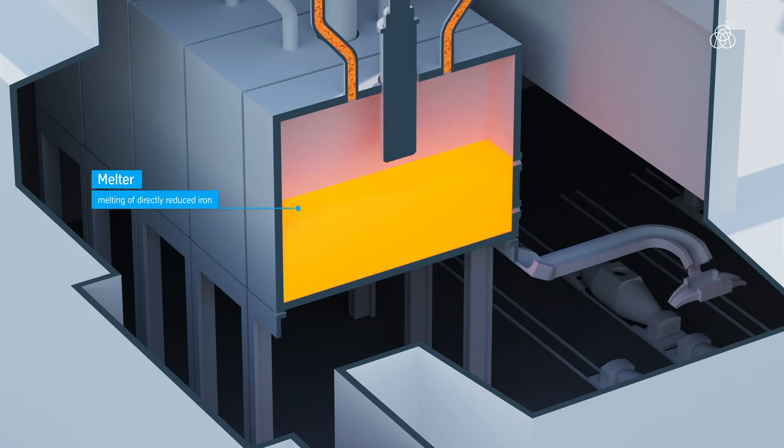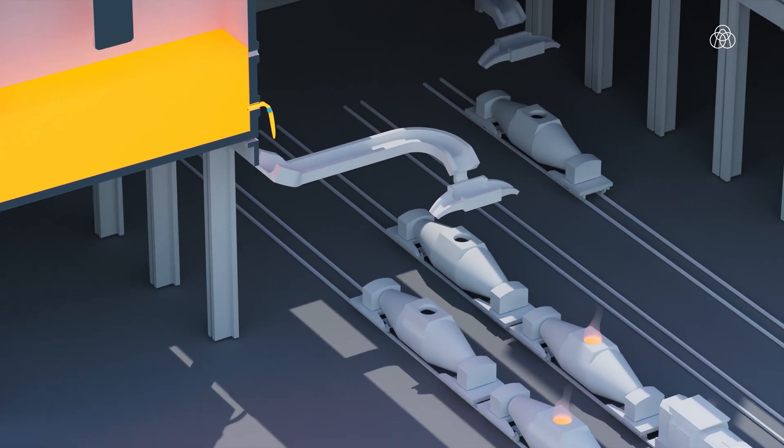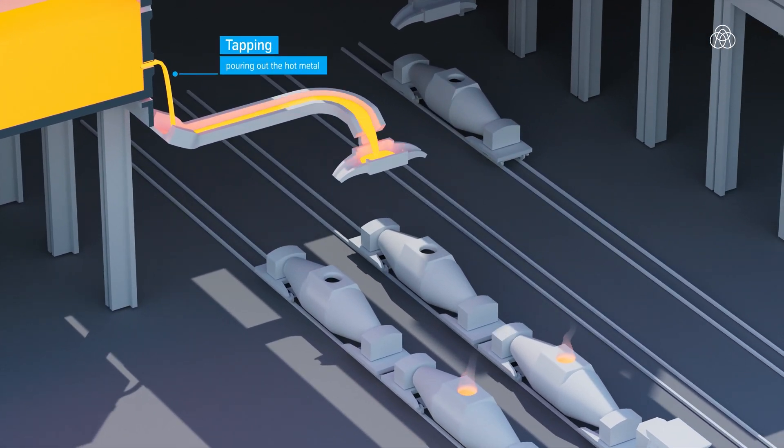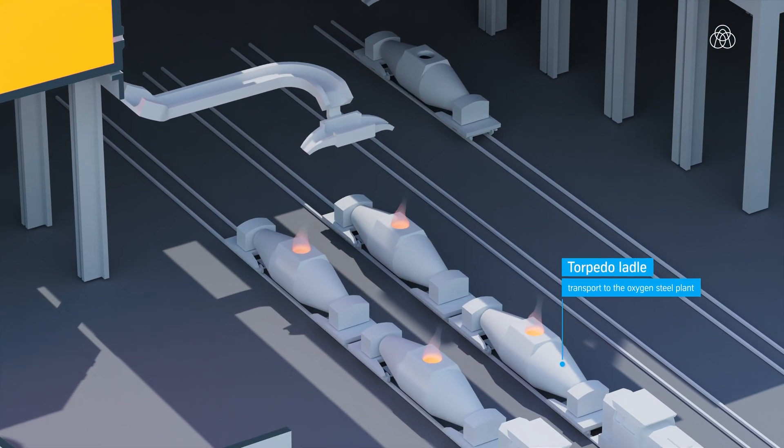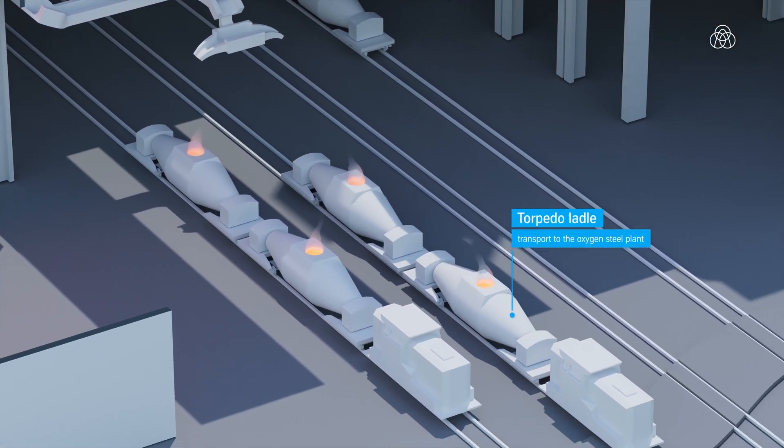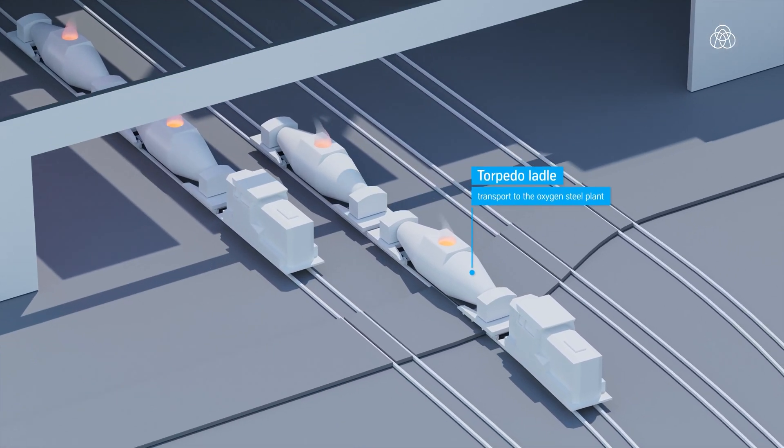The furnace vessel of each melter has separate tap holes for tapping the hot metal and slag. The liquid slag is channelled into the slag granulation system. During tapping, the hot metal is poured into torpedo ladles and transported via the rail network to the BOF melt shop for further processing.